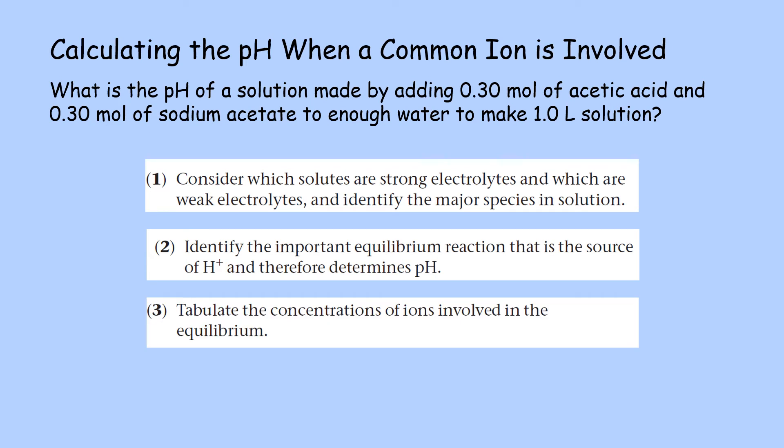Third, tabulate the concentrations of ions involved in the equilibrium. And then last, use the equilibrium constant expression to calculate for the concentration of hydrogen ions and then pH. Now, we will be using all of these steps to solve for this problem.